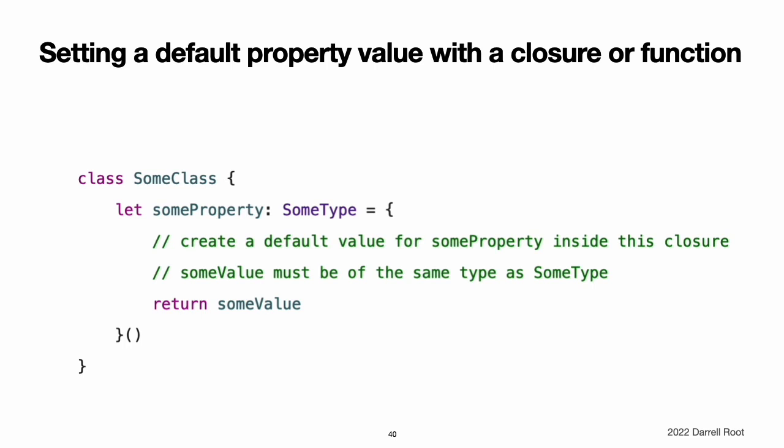Setting a default property value with a closure or function. If a stored property's default value requires some customization or setup, you can use a closure or a global function to provide a customized default value for that property. Whenever a new instance of the type that the property belongs to is initialized, the closure or function is called, and its return value is assigned as the property's default value. These kinds of closures or functions typically create a temporary value of the same type as the property, tailor that value to represent the desired initial state, and then return that temporary value to be used as the property's default value.